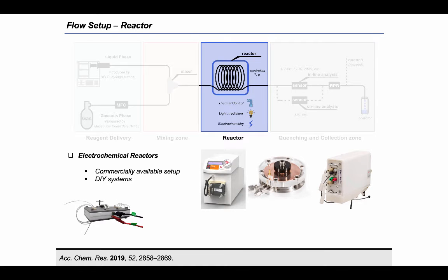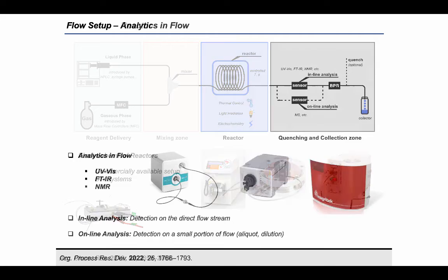While thermal and photochemical reactors are relatively easy to make, electrochemical reactors are usually much more complicated to design and manufacture. Most of the time, chemists rely on commercially available designs where different electrodes can be used.